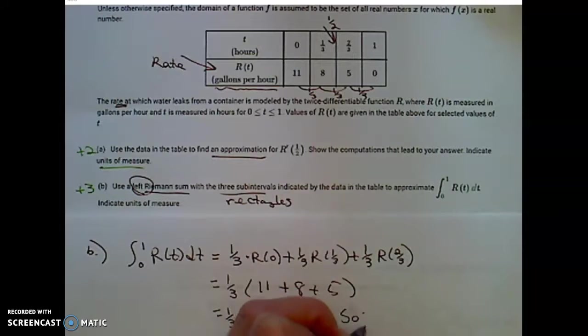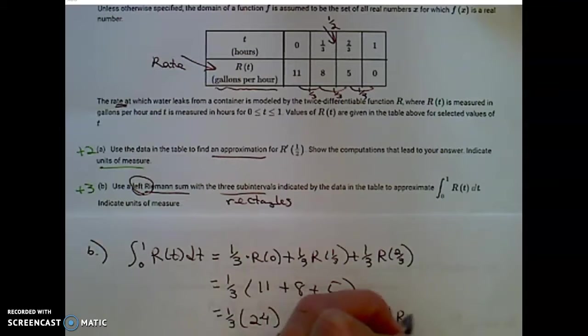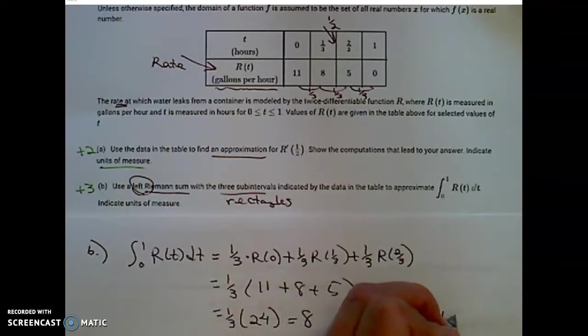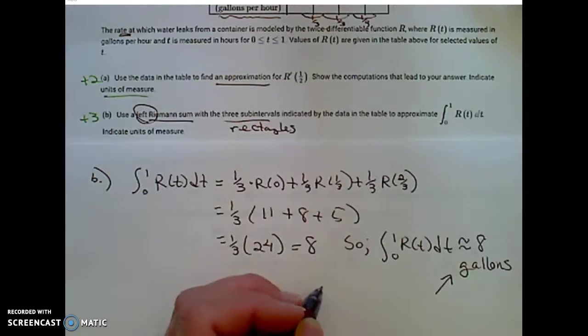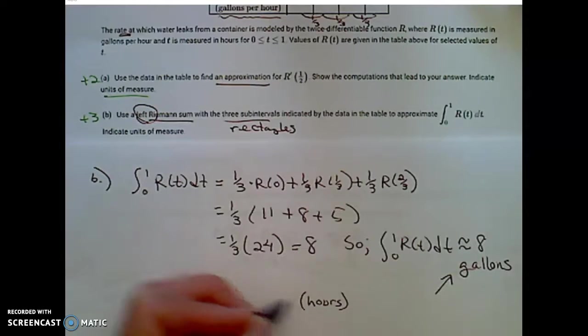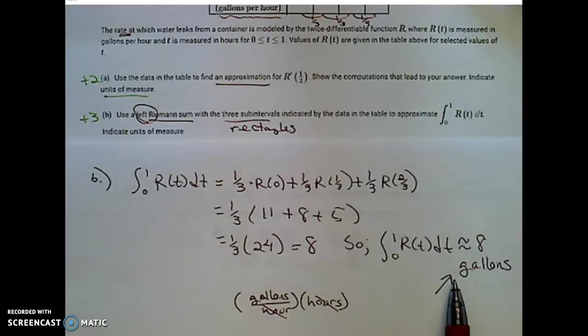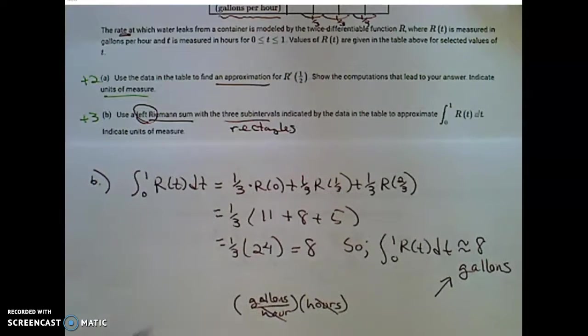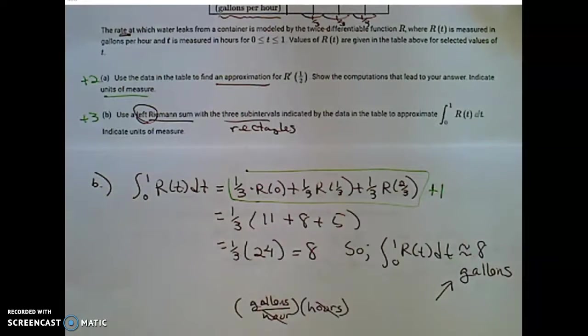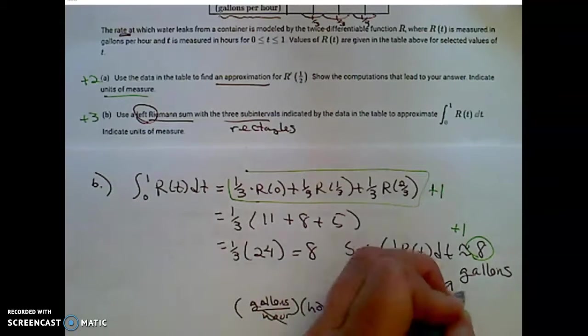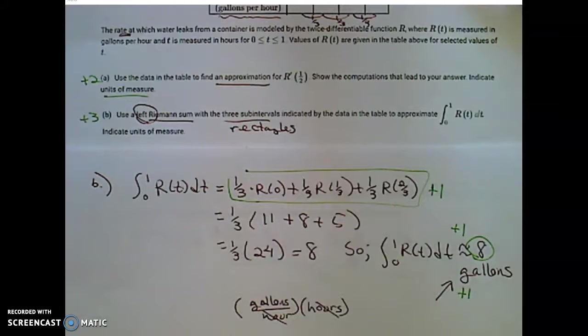So we have approximately that integral from 0 to 1 of R of t dt is approximately 8 gallons. Those units were important. It would be important if my base was in hours of those rectangles times the height, the function values, which were gallons per hour. And our resulting unit is in gallons. This was worth three points. You got one point for showing that left Riemann sum. You earned one point for a correct answer. And you earned one point for the correct units. So those units are important.